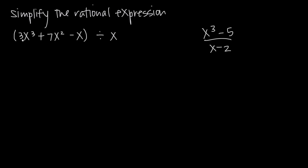In this first expression, the polynomial 3x cubed plus 7x squared minus x is the numerator, and the single x by itself is the denominator. So when we say divided by, we have numerator divided by denominator. What we're going to do to simplify these is use polynomial long division.